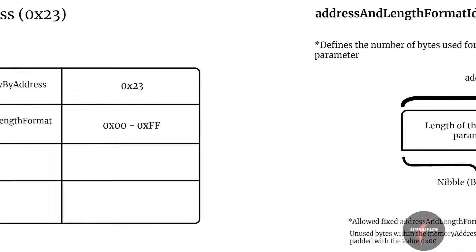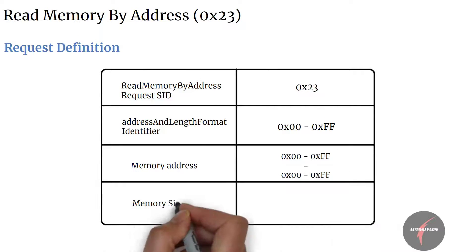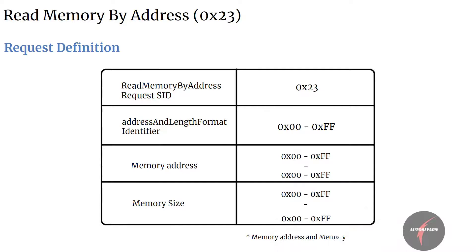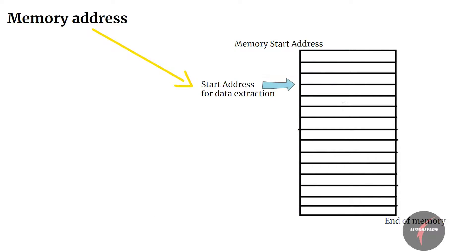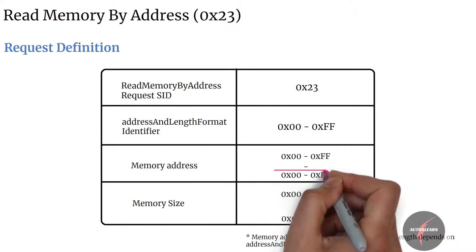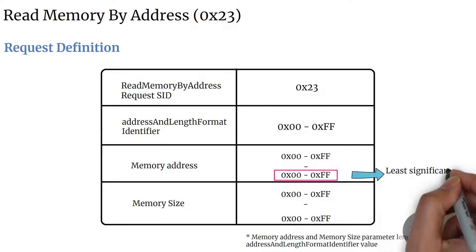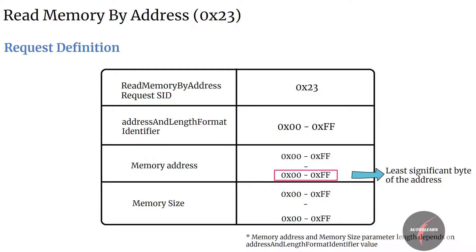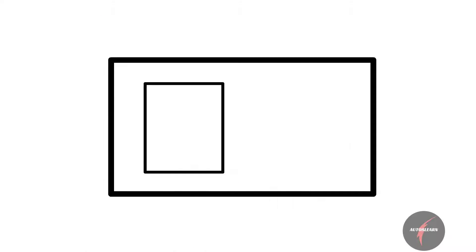Let's look into our next set of parameters: memory address and memory size. As the name implies, the memory address parameter is the starting address of the server memory from which the data is to be retrieved. Byte 'm' of the parameter is always the least significant byte of the address being referred to in the server.